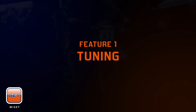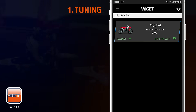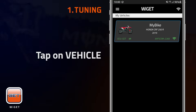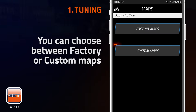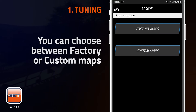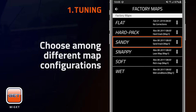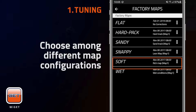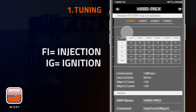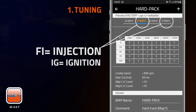The Tuning function allows riders to select their favorite map configuration. To start tuning your ECU, tap on Vehicle and choose between Factory Maps or Custom Maps. Factory Maps are pre-developed by Get R&D Department and are already available in the app. Tap on Factory Maps and choose among different map configurations according to your riding needs and track conditions. After selecting the best map configuration, the app shows map parameters such as Injection and Ignition.